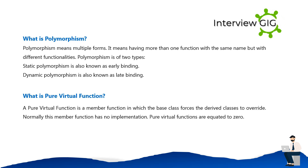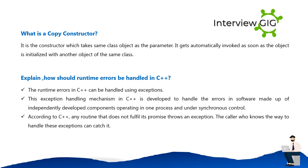What is a pure virtual function? A pure virtual function is a member function in which the base class forces the derived classes to override. Normally this member function has no implementation, and pure virtual functions are equated to zero. What is a copy constructor? It is a constructor which takes the same class object as a parameter, and it is automatically invoked as soon as the object is initialized with another object of the same class.